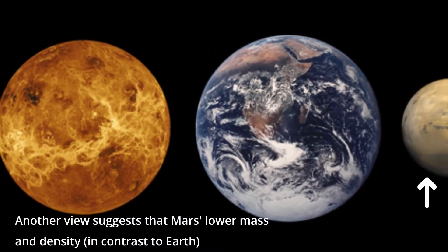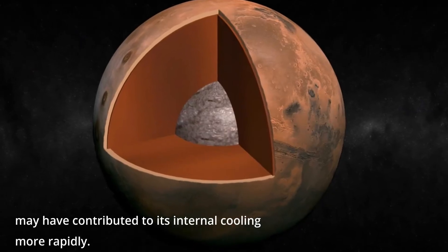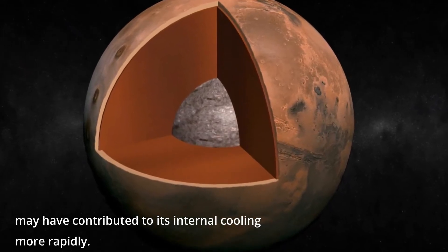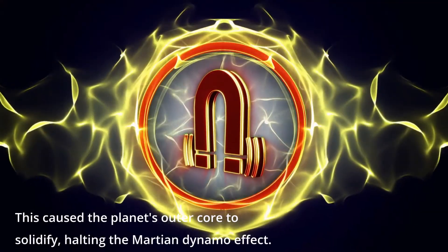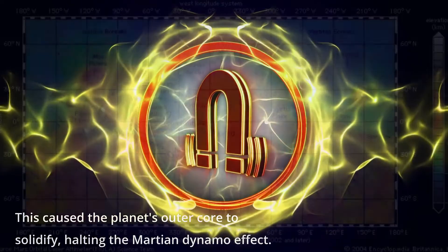Another view suggests that Mars' lower mass and density, in contrast to Earth, may have contributed to its internal cooling more rapidly. This caused the planet's outer core to solidify, halting the Martian dynamo effect.